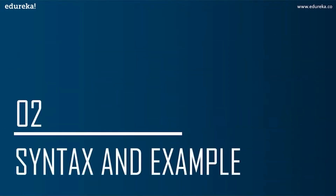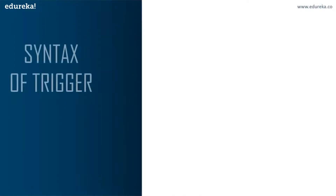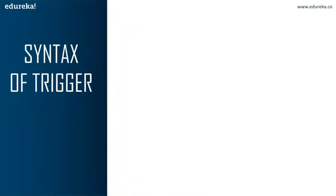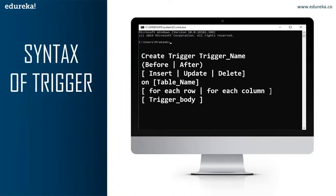The next topic is the syntax and example of a trigger. On the screen we can see the syntax of a trigger, and let me explain each part in detail. The first part is CREATE TRIGGER — these two keywords specify that a trigger block is going to be declared. The next one is the trigger name, which specifies the name of the trigger. The trigger name has to be unique and shouldn't repeat.